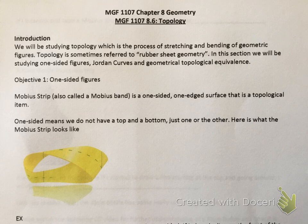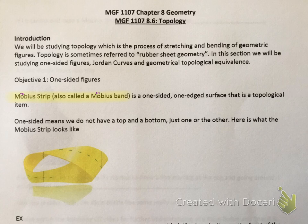In this section we'll be studying one-sided figures, Jordan curves, and topological equivalents. Objective one: we're going to look at one-sided figures. The first one is the Möbius strip — also called the Möbius band — which should have an umlaut over the O. It is a one-sided, one-edge surface that is a topological item — a very special shape. One-sided means we do not have a top and a bottom; we just have one side.